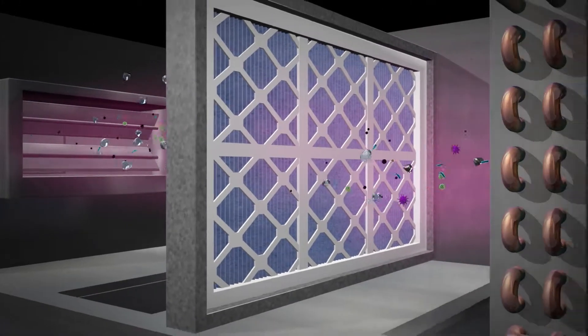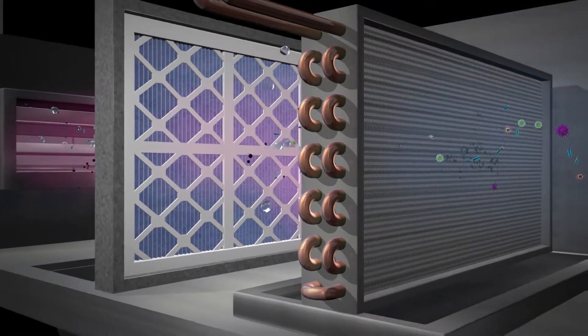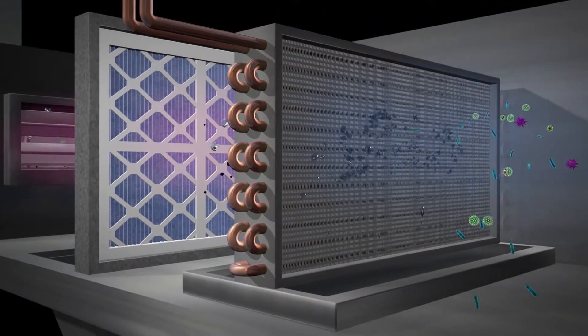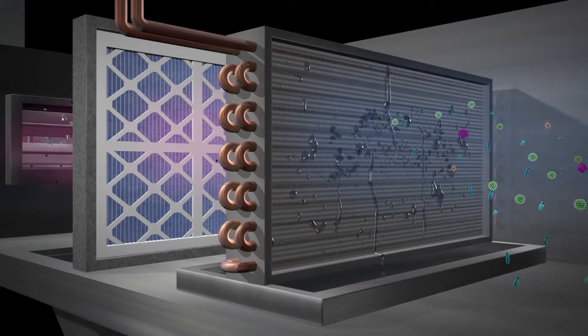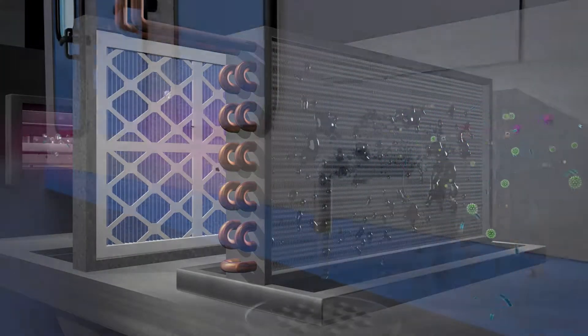This mixed air is passed through the primary filters to remove big dirt particulates. The resulting condensate in the cooling coil is drained away to the sewer.